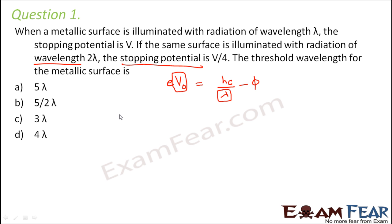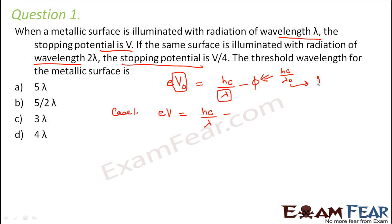For case one: radiation of wavelength lambda gives stopping potential V, so eV = HC/λ − φ. Here φ is the work function, which can be written as HC/λ₀ where λ₀ is the threshold wavelength we need to calculate. This is equation one.